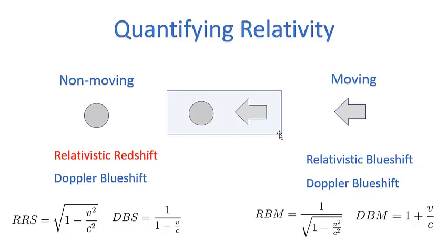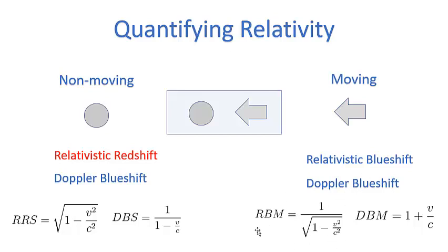This is a little harder to understand, but the object in motion is experiencing clock retardation and is going to be getting pulses faster and faster from the object not in motion — receiving pulses faster than it expects. So it is going to see a relativistic blueshift relative to what it's expecting. The non-moving object uses the relativistic redshift equation (RRS), and the object in motion uses RBM — the relativistic blueshift for the object in motion.